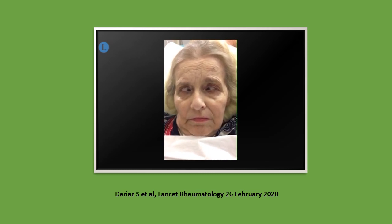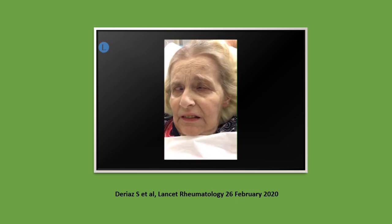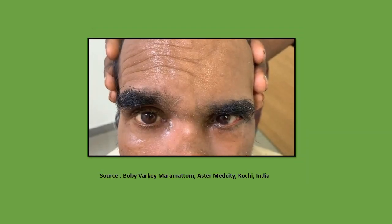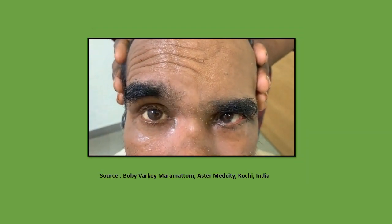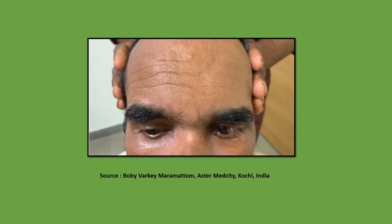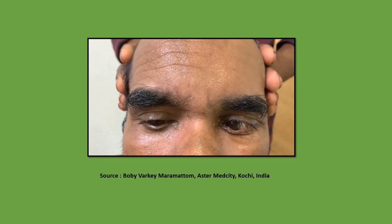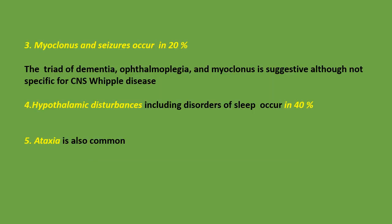This is a video of oculomasticatory myorrhythmia — note the inward and divergent movement of the eyes and dystonia of the muscles of mastication. This is an example of oculoskeletal myorrhythmia — note abnormal eye movements as well as abnormal movements of the facial muscles. Myoclonus and seizures occur in 20%. The triad of dementia, ophthalmoplegia, and myoclonus is suggestive, although not specific, for CNS Whipple disease.